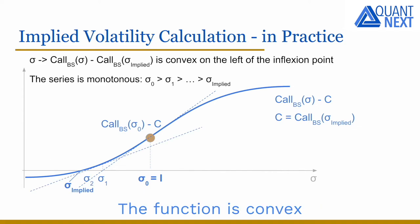The function is convex on the left of the inflection point and the tangent is always below the function line. We see that the series is monotonous with sigma 0 higher than sigma 1, which is higher than sigma 2, etc.